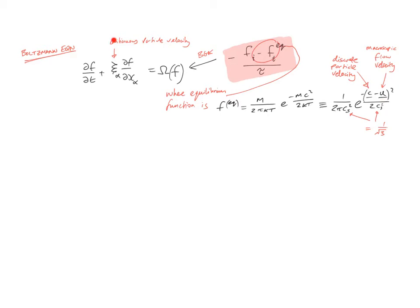Note that we've moved from the continuous particle velocity to the discrete particle velocity. We introduce the value cs, which equals the speed of sound, which equals 1 over root 3. Our f equilibrium function is now effectively equal to this term here. So what we now have to do is discretize both the Boltzmann equation and the equilibrium function.